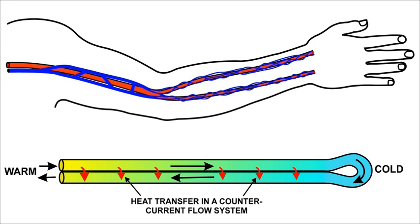Countercurrent exchange in biological systems occurred following the discovery of countercurrent multiplication systems by Werner Kuhn. Countercurrent exchange is used extensively in biological systems for a wide variety of purposes. For example, fish use it in their gills to transfer oxygen from the surrounding water into their blood, and birds use a countercurrent heat exchanger between blood vessels in their legs to keep heat concentrated within their bodies. In vertebrates, this type of organ is referred to as a rete mirabile, originally the name of the organ in the fish gills. Mammalian kidneys use countercurrent exchange to remove water from urine so the body can retain water used to move the nitrogenous waste products.